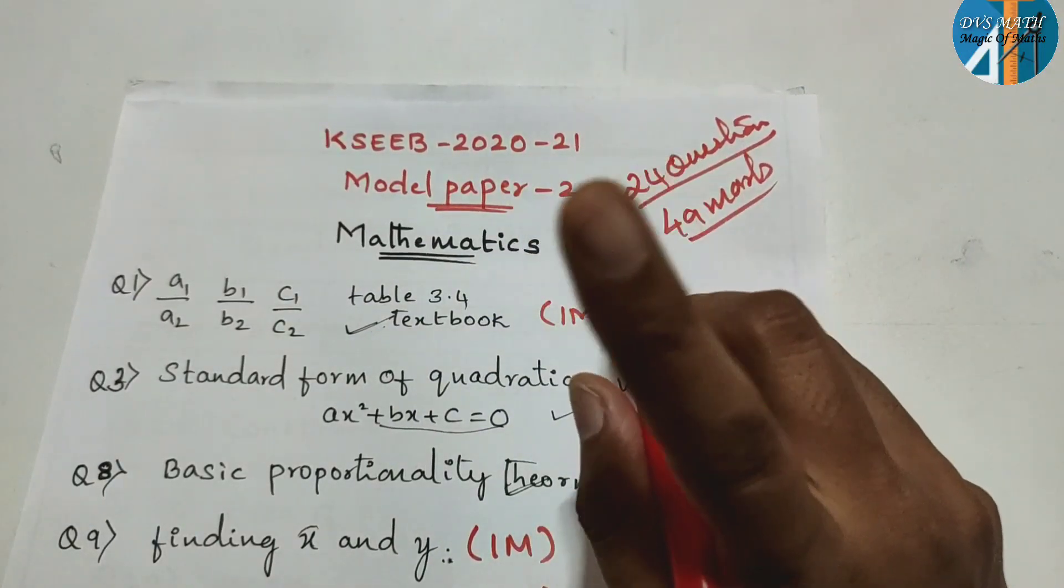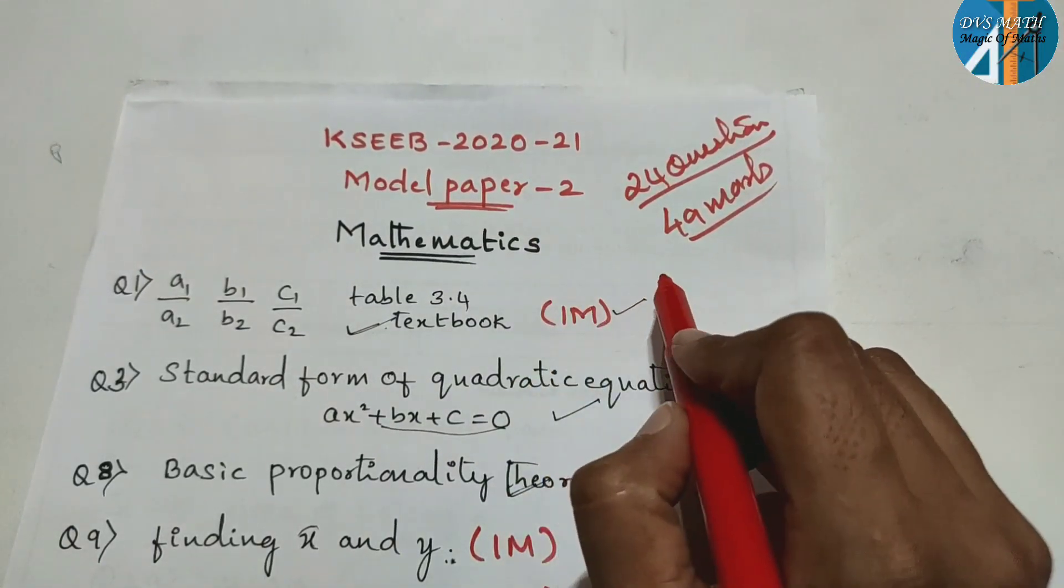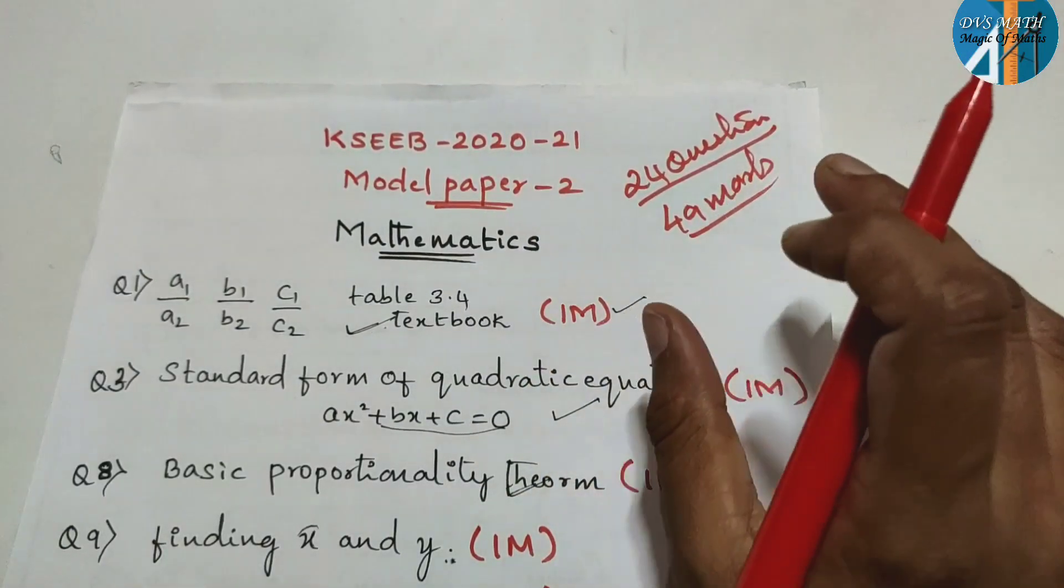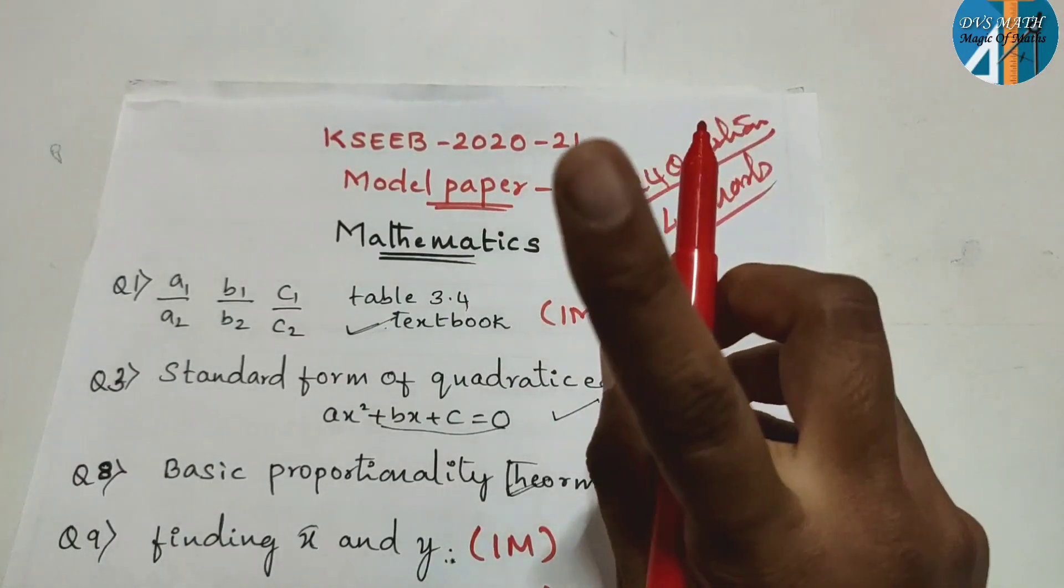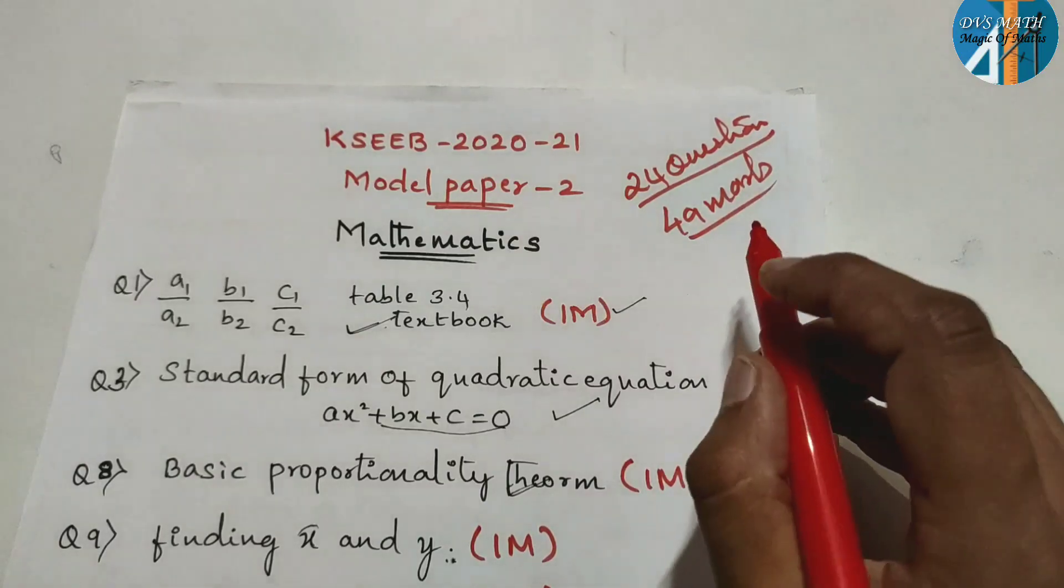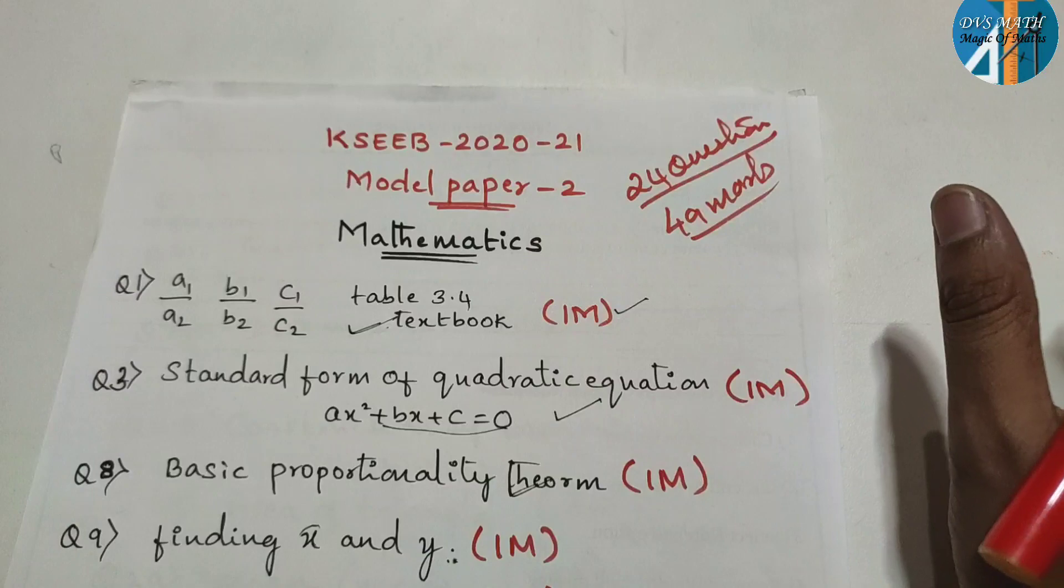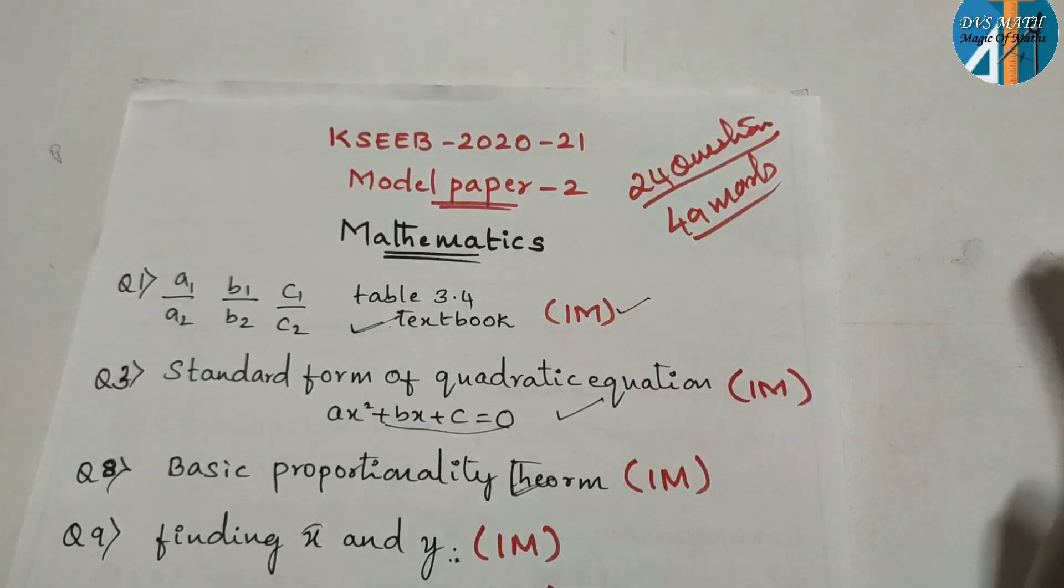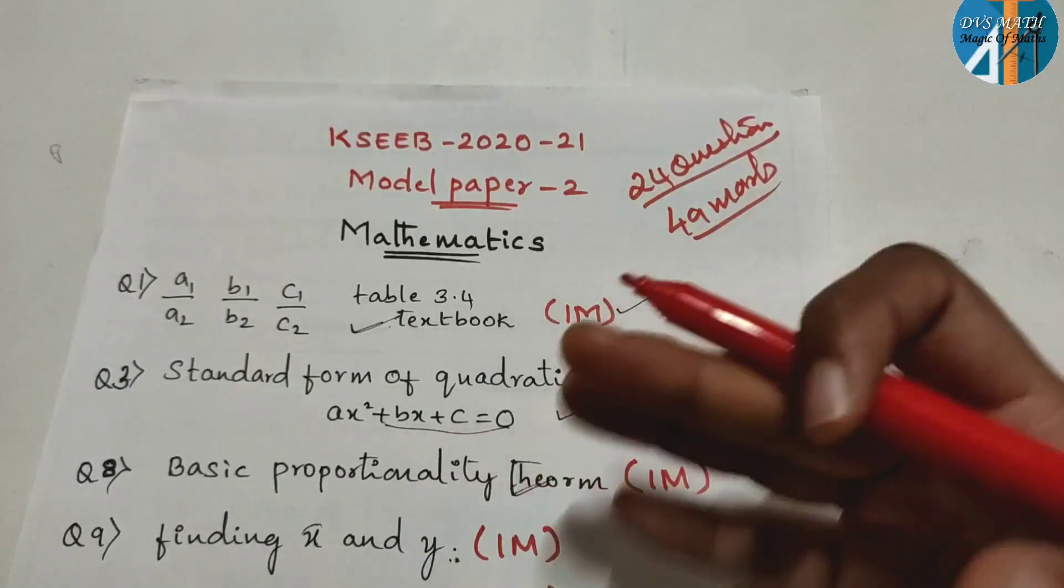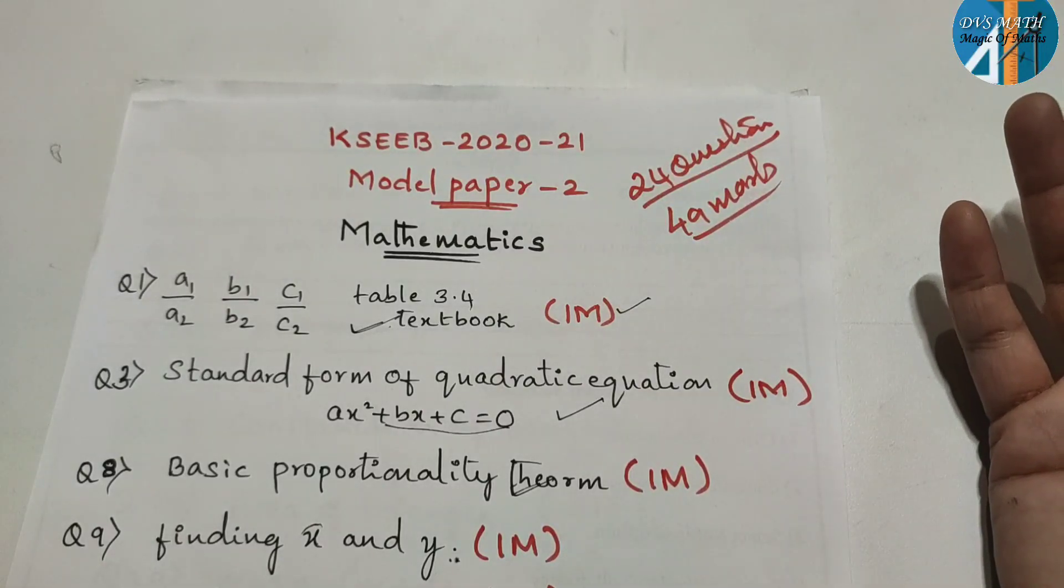In the last model paper, 20 questions, 45 marks. In this, 24 questions, 49 marks. So if you mark those questions in those two papers and mark those questions here and practice definitely, in this 1 month you can get ready. In the remaining 30 marks, you can score marks by leaving those lessons here and those questions.